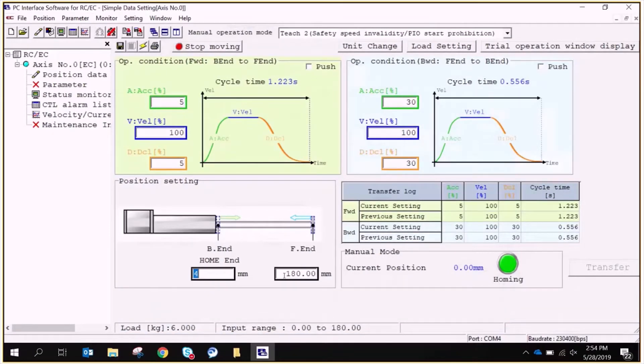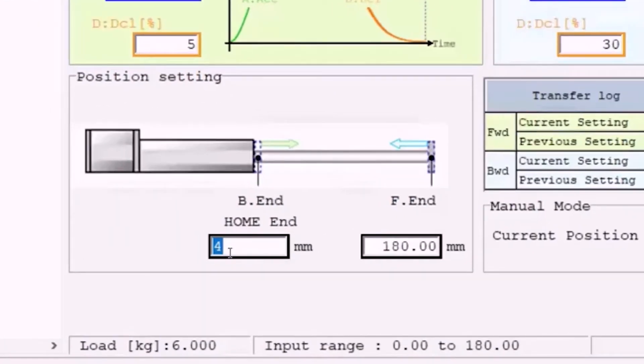Down at the bottom of the screen, we'll set the two positions for the actuator. In this sample, we set the base end position to 4 millimeters and the far end position to 150 millimeters.